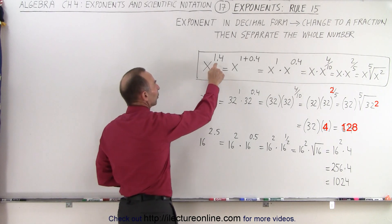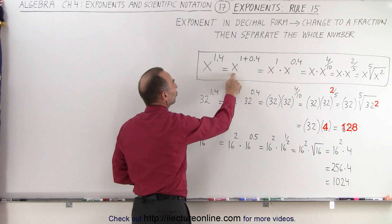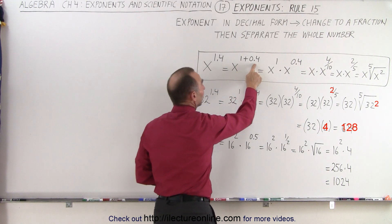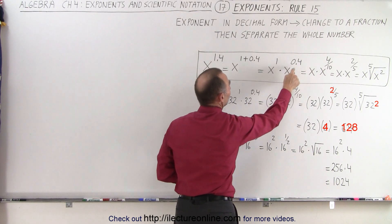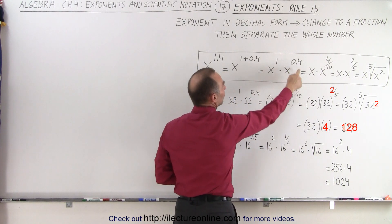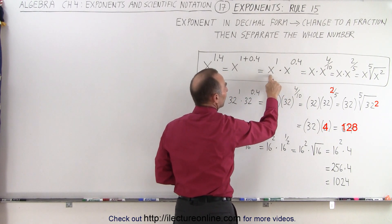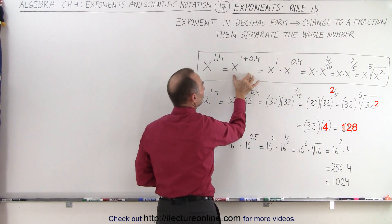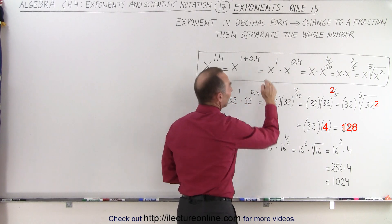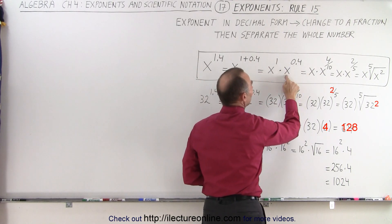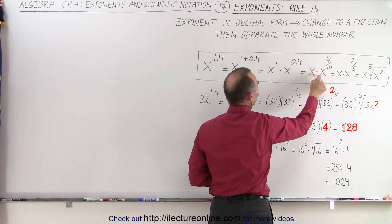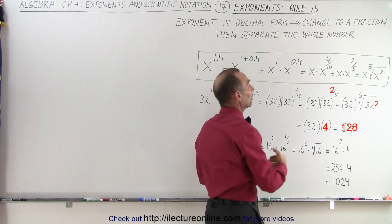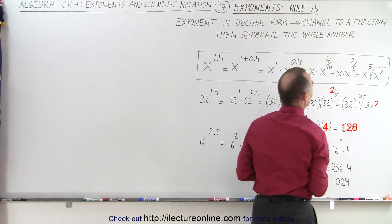For example, x to the 1.4 power is equal to x to the 1 plus 0.4, and once we have it in this format we can write it as x to the 1st times x to the 0.4, because we know that when we multiply two numbers, the bases are the same, then we can add the exponents, so we can go from here to here, which means we can go from here back to here. Now x to the 1st power is simply x, and x to the 0.4 power is x to the 4 tenths or x to the 2 fifths, which we saw before can be written as the fifth root of x squared.